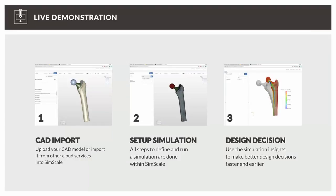Now we switch to the live demonstration. The simulation setup works in three steps. First, import and upload a clean, simplified CAD model to SimScale. Second, set up the simulation by applying materials, loads, and boundary conditions. Third — the most interesting step — look at the results to understand how the loads are affecting the hip.